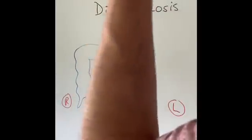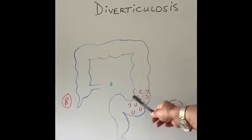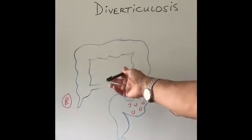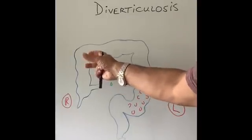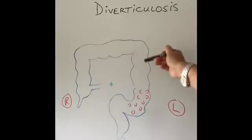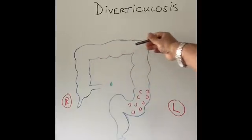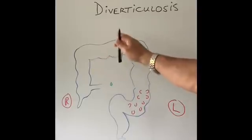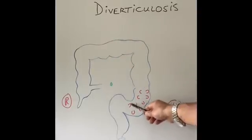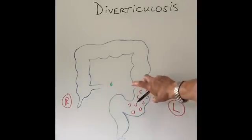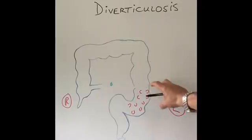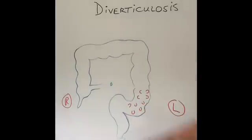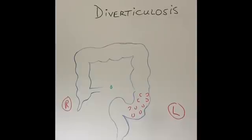The reason it is more common on the left side compared to the right is because the contents on the right side are very fluid and liquidy, so the pressure the bowel needs to push things through is much less. By the time stool comes into the left side of the colon, most of the water has been absorbed already, and what is left is very solid stool. That solid stool makes the pressure inside much higher, which is why these pockets are more common on the left side.